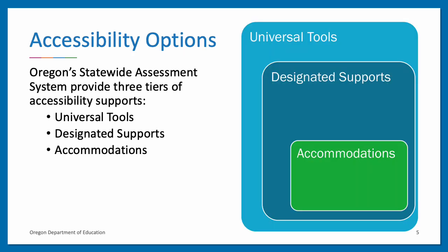It is critical to know the differences between each tier of statewide assessment accessibility supports. Specifically, there are three tiers of support: universal tools, designated supports, and accommodations. Each of the three tiers of support have different rules for implementation.